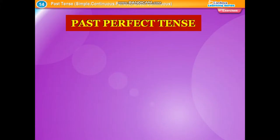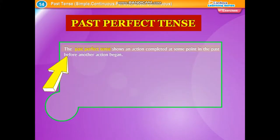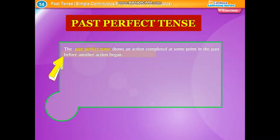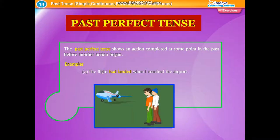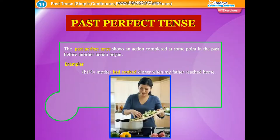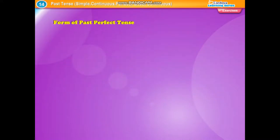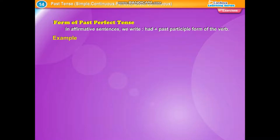Past perfect tense. The past perfect tense shows an action completed at some point in the past before another action began. Examples: The flight had landed when I reached the airport. My mother had cooked dinner when my father reached home. In affirmative sentences, we write: had plus past participle form of the verb. Example: She had left for the day.